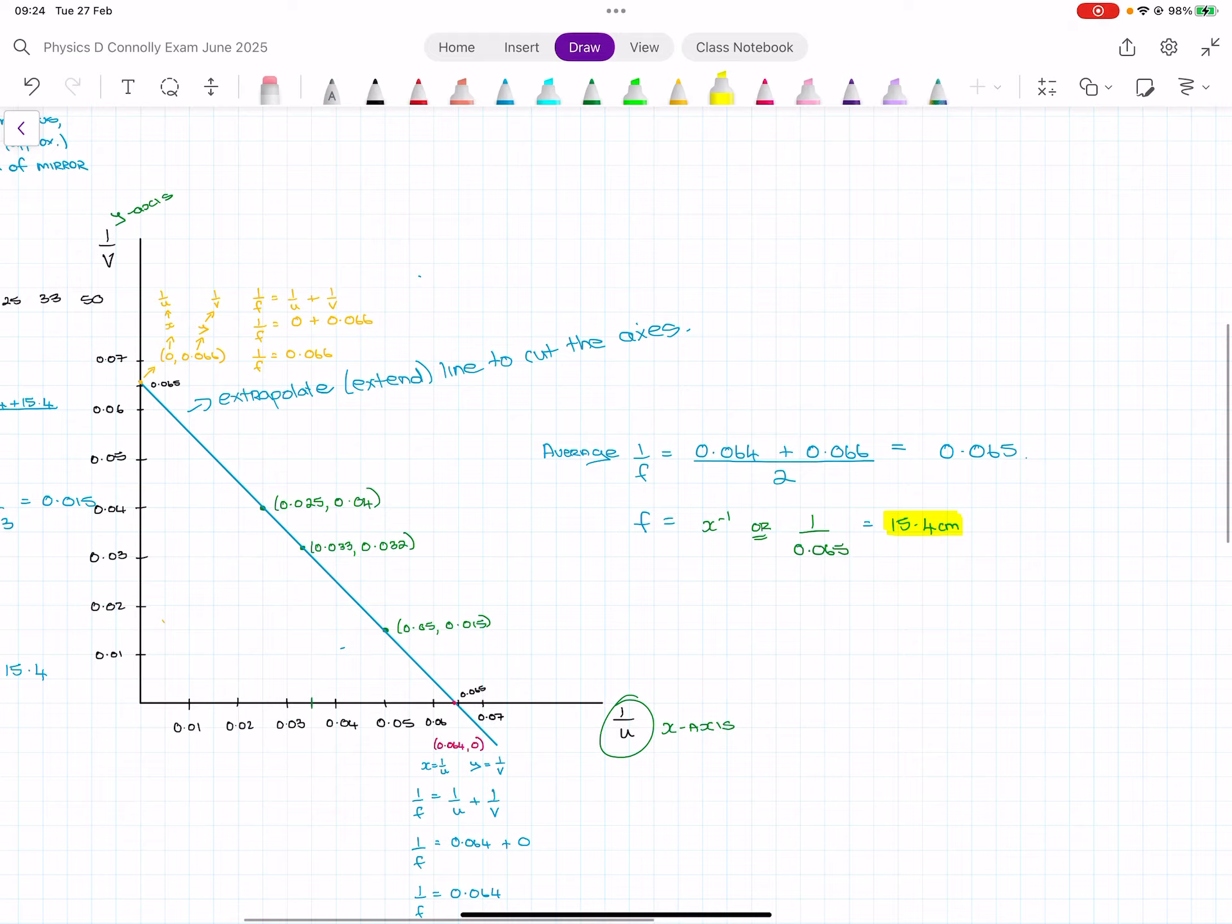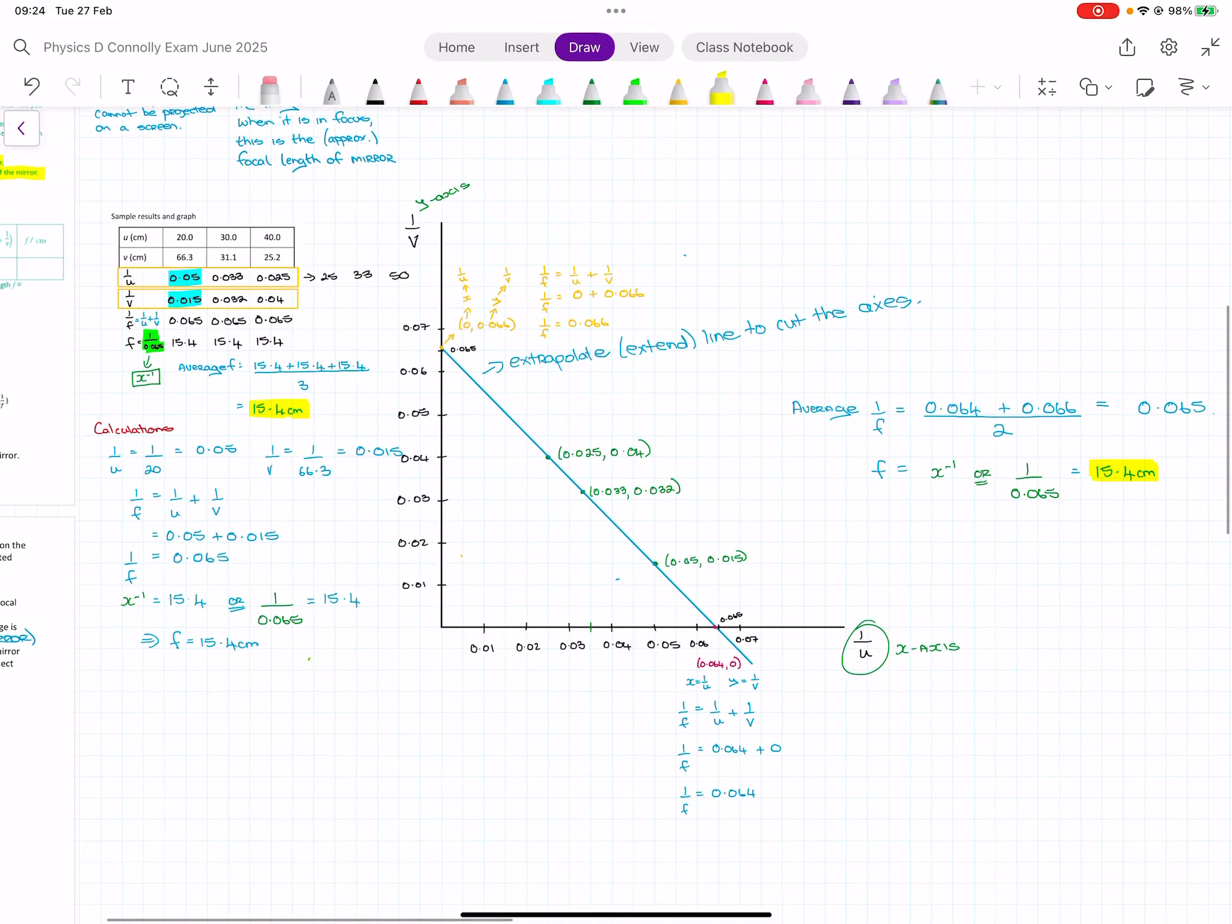So that is how you do the results table, the calculations, and the graph. It's not a slope in this one - you extrapolate and you take intercepts. So we figured out where it cut the x-axis, we figured out where it cut the y-axis. That gave us two values for 1 over f which we averaged. And obviously this data being manufactured data is perfect. So hopefully that helps you with your graph, and at least then you'll have it to look back on. These graphs are a bit tricky, and when you do the lens experiment, the graph's exactly the same.